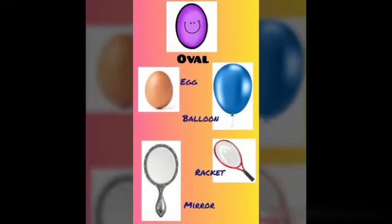I am an oval and I am shaped like an egg. Come, let's see the oval things. An egg, balloon, mirror and a racket — all are oval in shape.